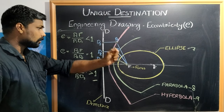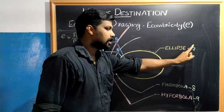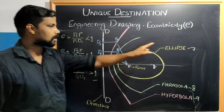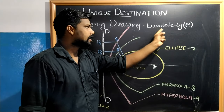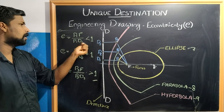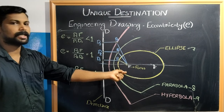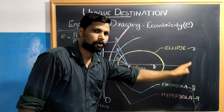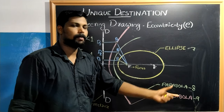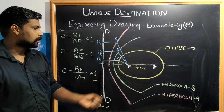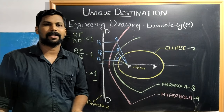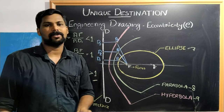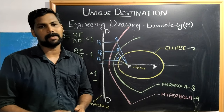If you are going to study for the exam, remember: eccentricity of a parabola is 1, and eccentricity of a hyperbola is greater than 1. Please like and share this video, and please subscribe to our channel.